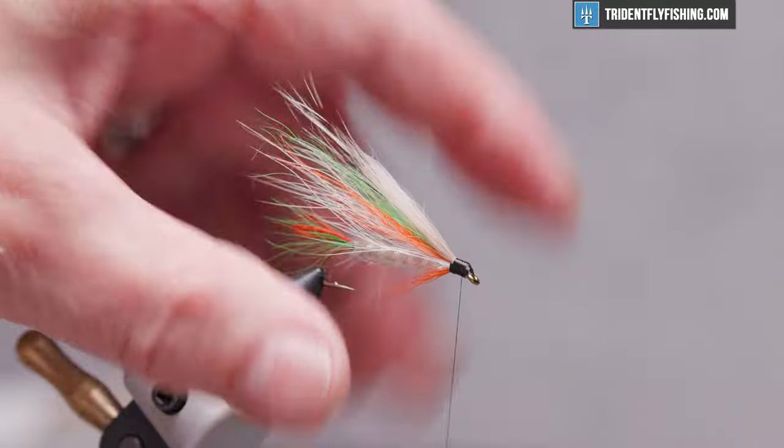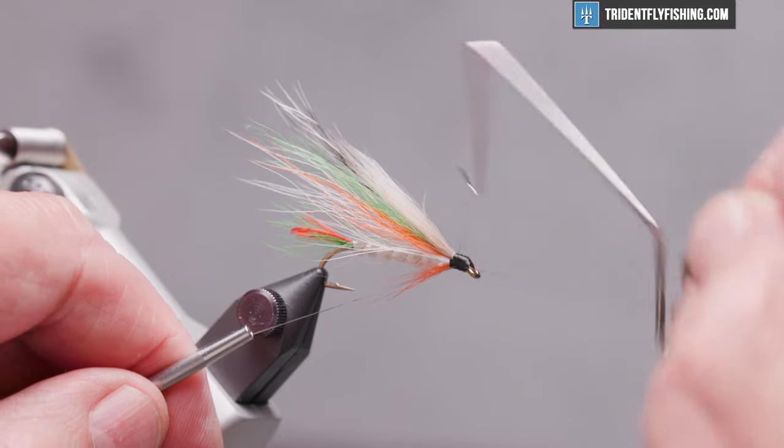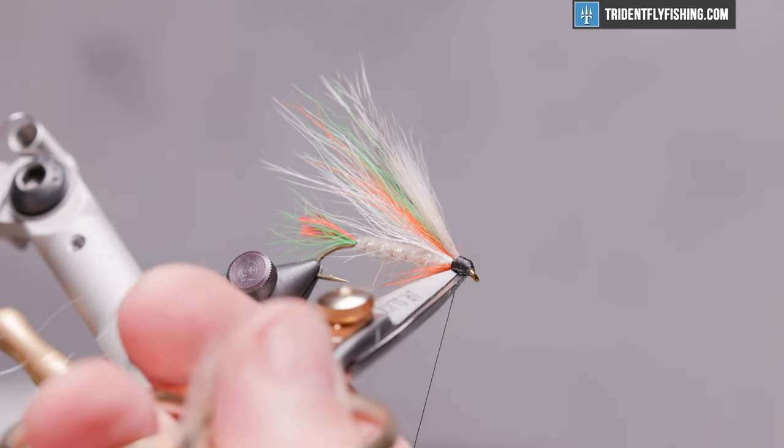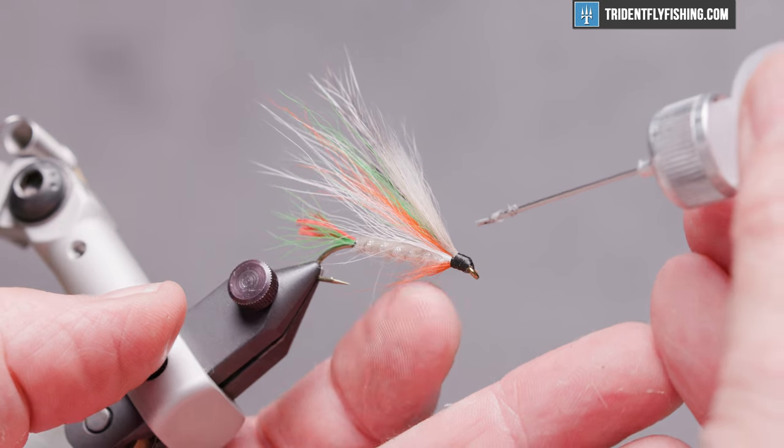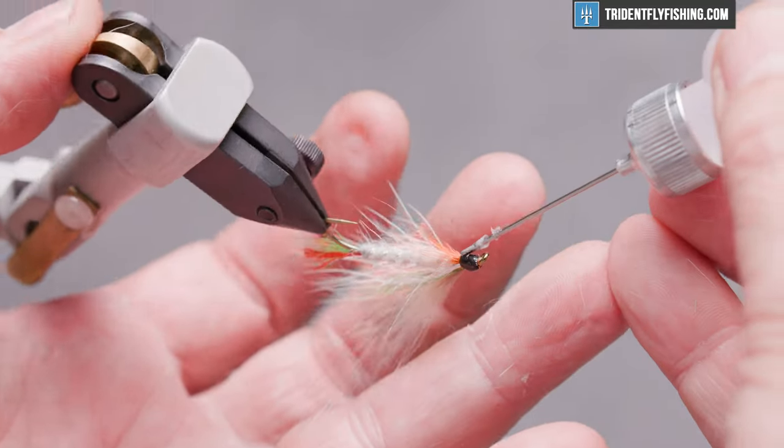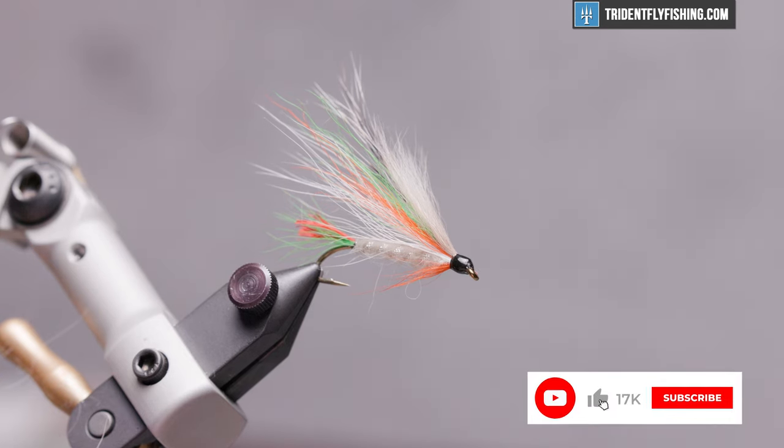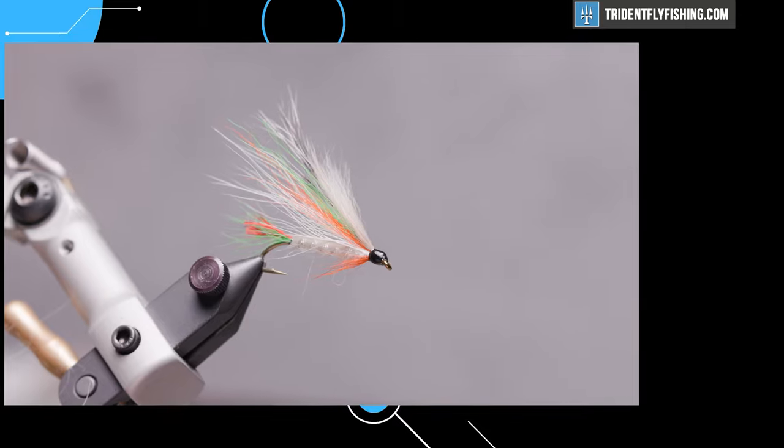Once you're satisfied with the shape of the head, you can make a four or five turn whip finish. Cut your thread and apply some head cement. And that's it. This is a really durable fly and one that the bass and trout are really going to like. Please feel free to leave comments. Don't forget to hit the subscribe button at the bottom of the page to keep you up to date on all the latest content at Trident Fly Fishing. Thanks for watching. Hope to see you again next time.